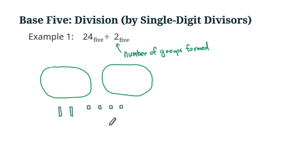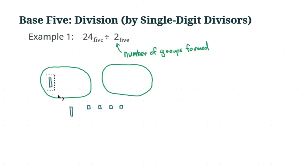We are ready to do the division. We are trying to put the two longs and four units into the two groups evenly. Sometimes it's not possible and you get a remainder, but let's not worry about that for now. Let's put the longs in first — put one long into this group, and then you also need to put another long into the other group, because we need to make sure we do it evenly. We're done with the longs now.